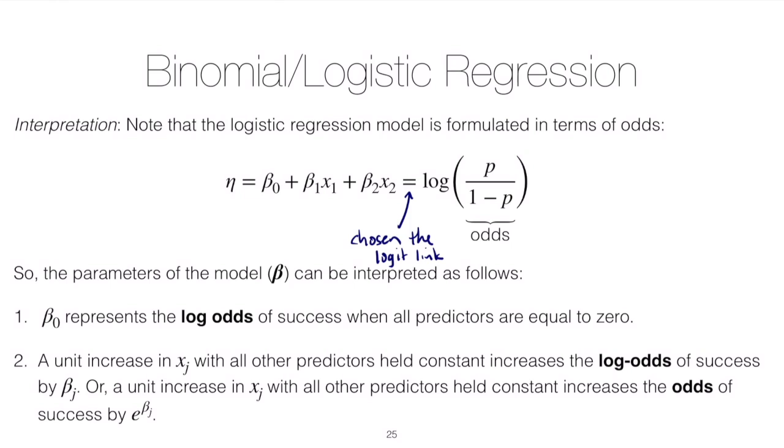Of course, you could turn that into something about not just the log odds but the odds of success, and you would have to exponentiate. If you took e raised to the beta_0, then you would have the odds of success when all predictors are equal to zero.